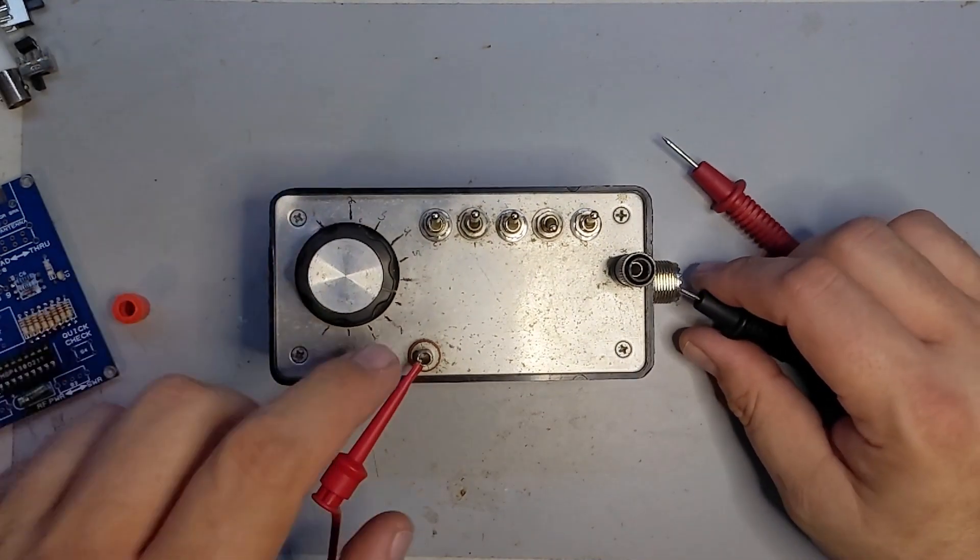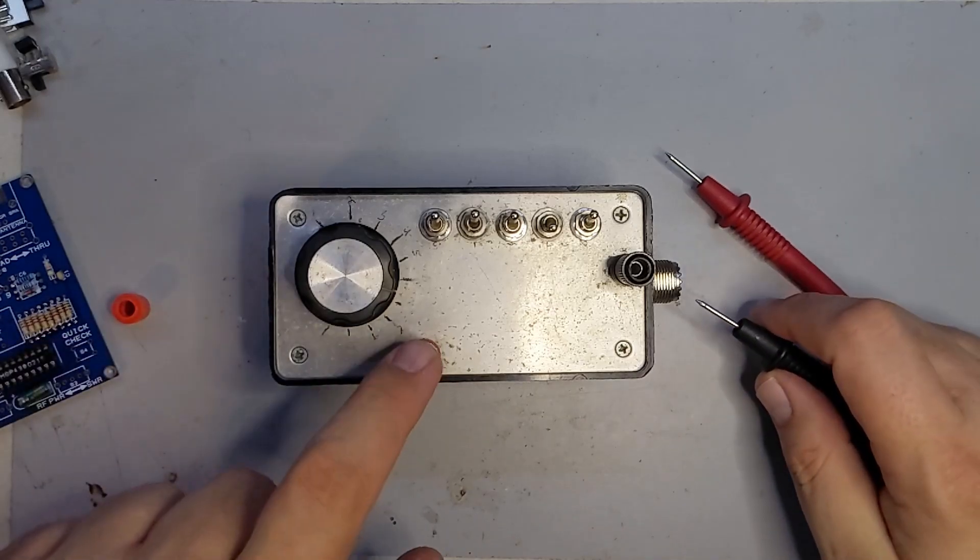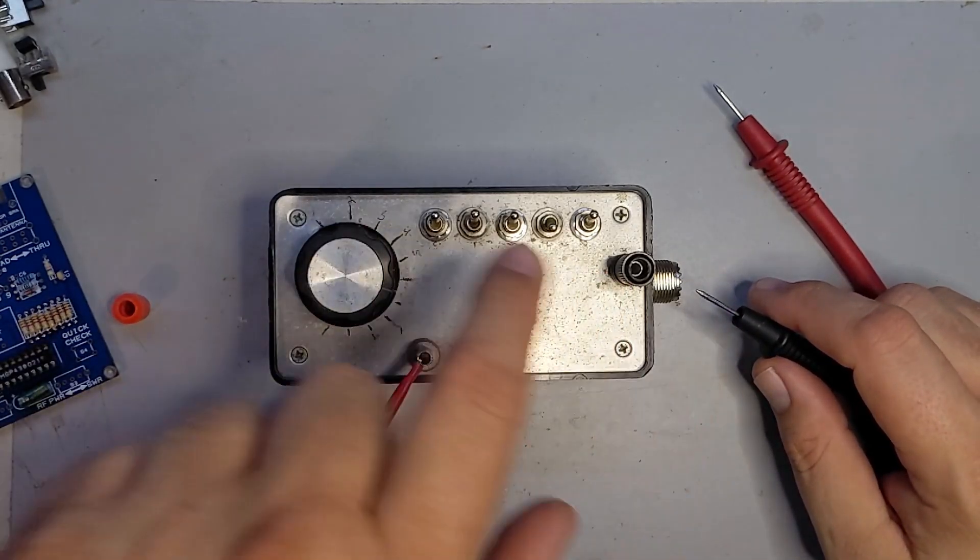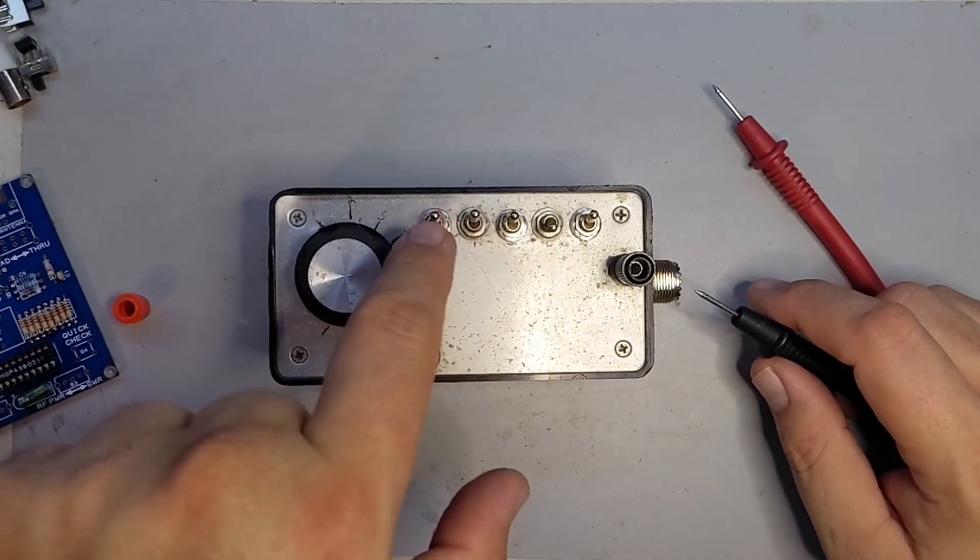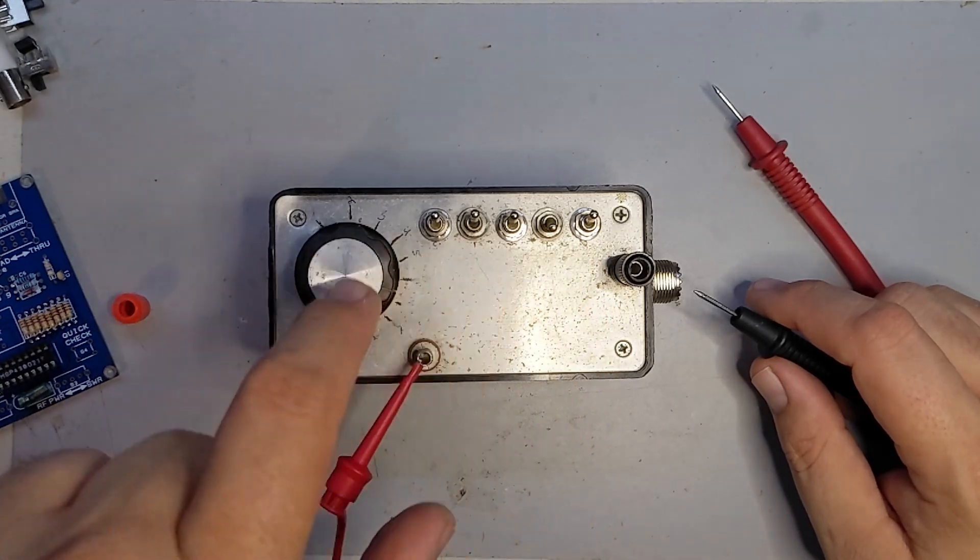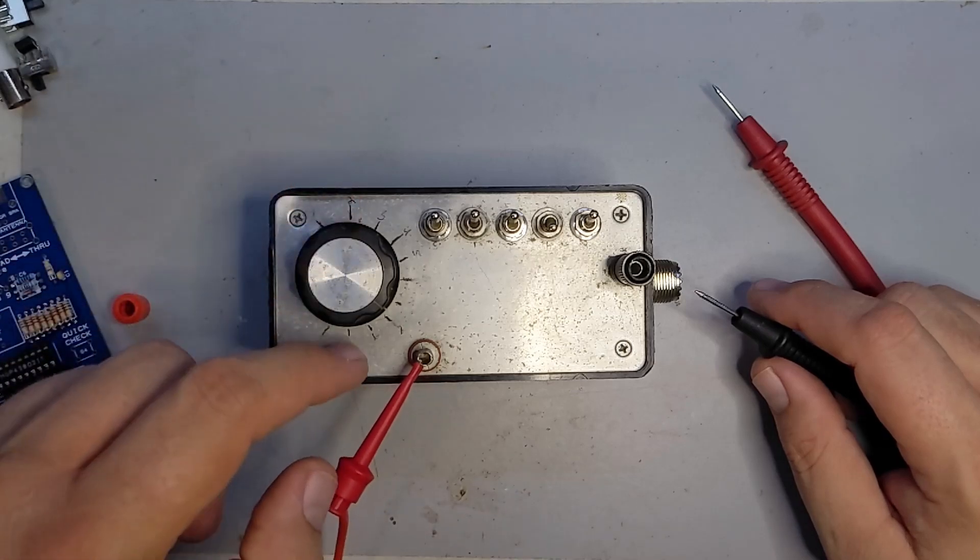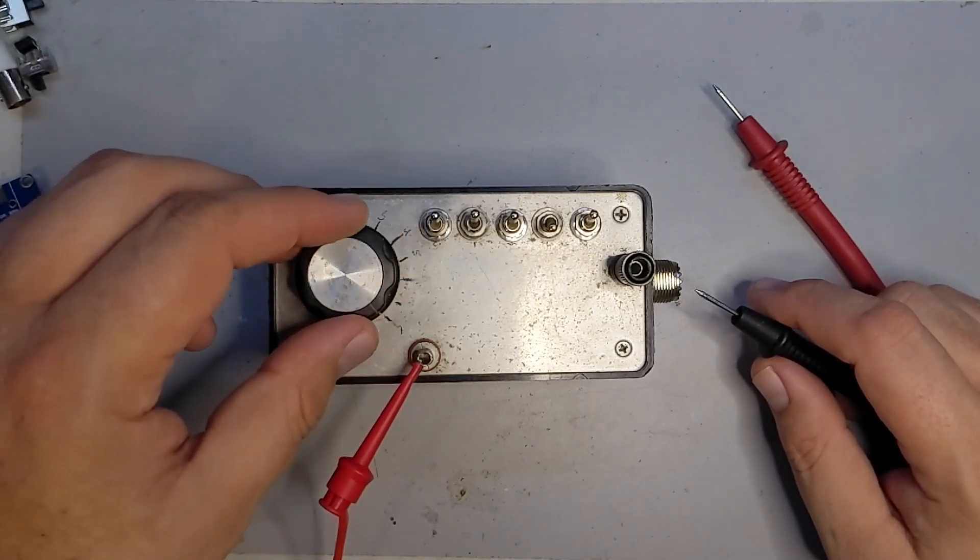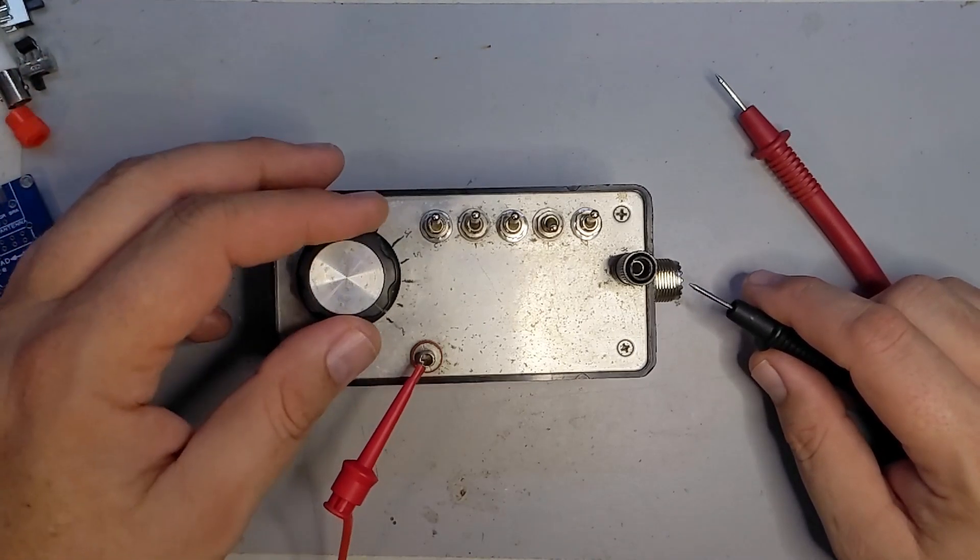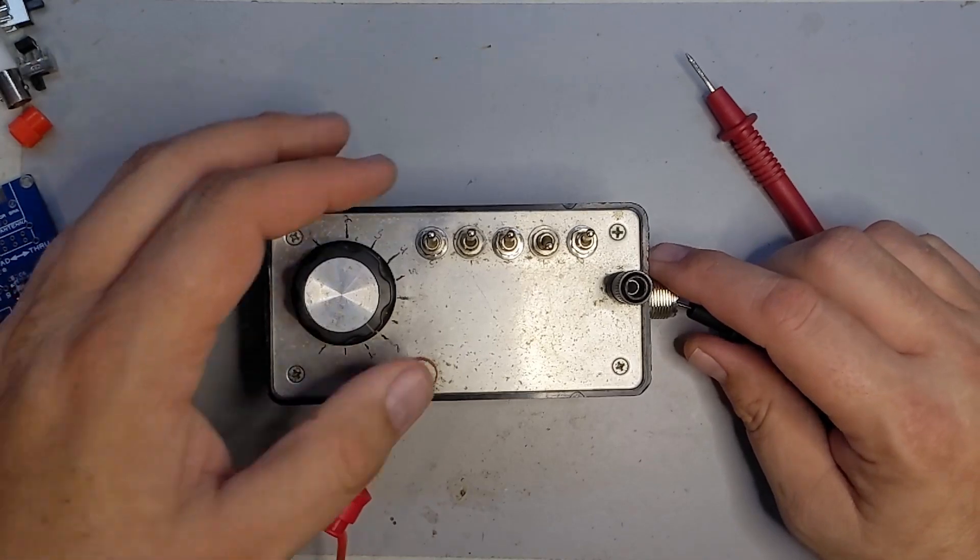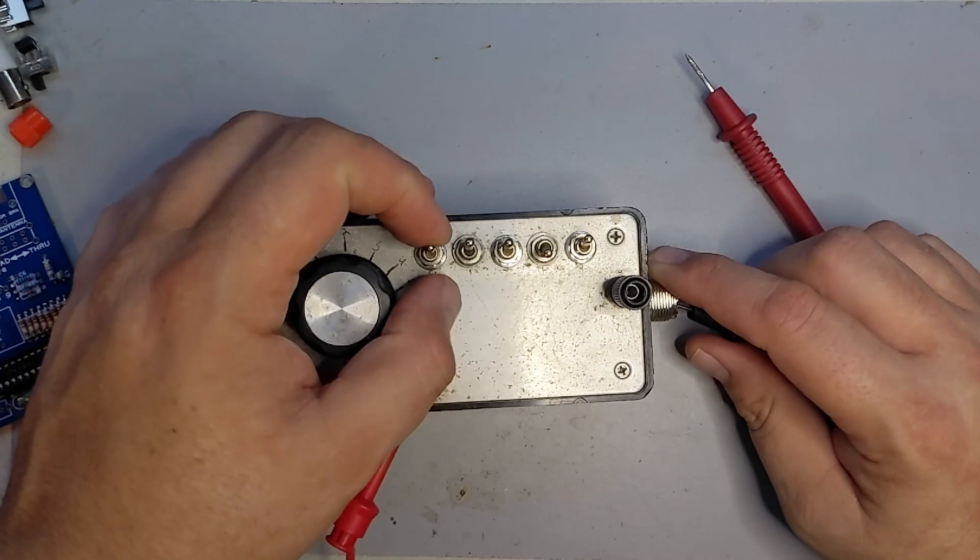I am getting continuity from the center conductor of the PL-250 or SO-239 to the output because this is just a straight shot. All the inductors should either be bypassed with the switch or in line with the switch. So I should always have continuity going through these inductors or their bypasses and into the output. The capacitor just goes across ground and output, it's not in line it's in parallel. I've got continuity here but not there and not here.